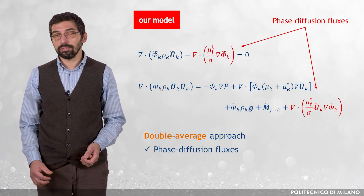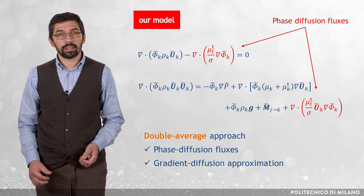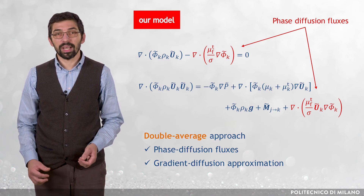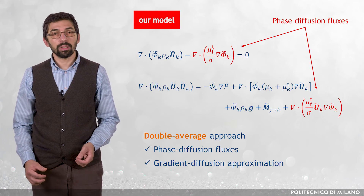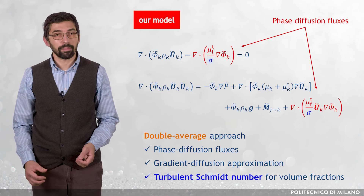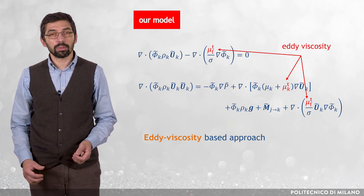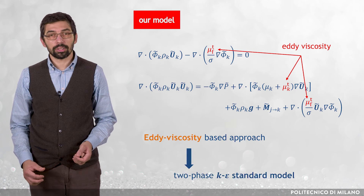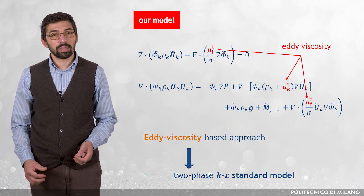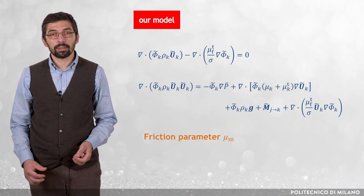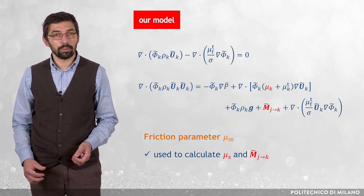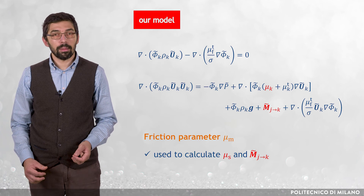As a result, all conservation equations include phase diffusion fluxes, which were modeled via gradient diffusion approximation, with diffusivity dependent on an empirical coefficient called the turbulent Schmidt number for volume fractions, sigma. An eddy viscosity-based approach was adopted to model the double correlations between the fluctuating velocities of both phases, and the two-phase extension of the K-Epsilon standard model was used to quantify the eddy viscosity. Another important characteristic of the model is the introduction of a friction parameter, mu_m, which is used to calculate the deviatoric stress tensor of the solid phase, tau_s, through a solid viscosity mu_s, and the interfacial momentum transfer term M from j to k.